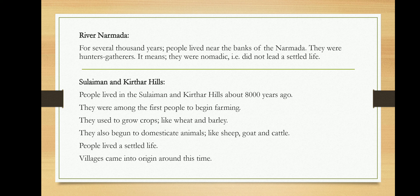Several people lived on the banks of the Narmada. They were hunters and gatherers. In the early period, people did not have food the way we do today. They hunted animals with whatever weapons they had and learned to make. They also gathered food, moving from one place to another in search of it. In the Sulaiman and Kirthar Hills, people lived about 8,000 years ago and were among the first to begin farming — cultivating crops like wheat and barley.